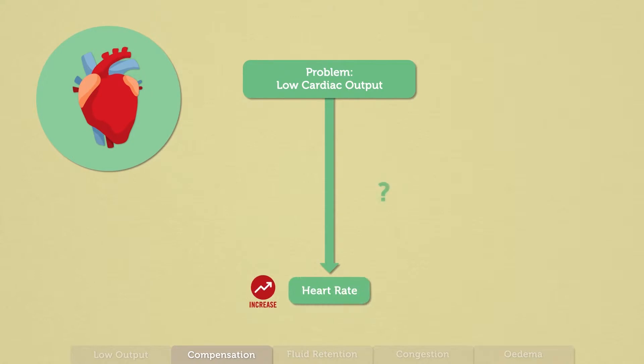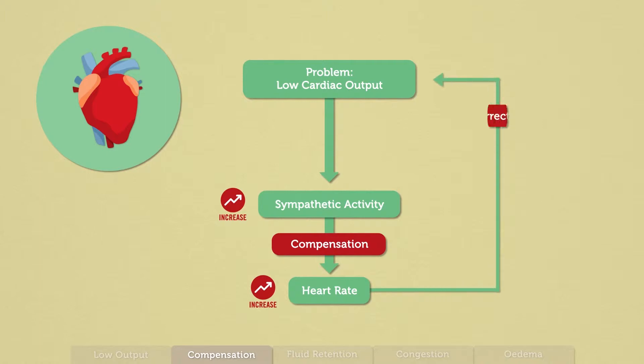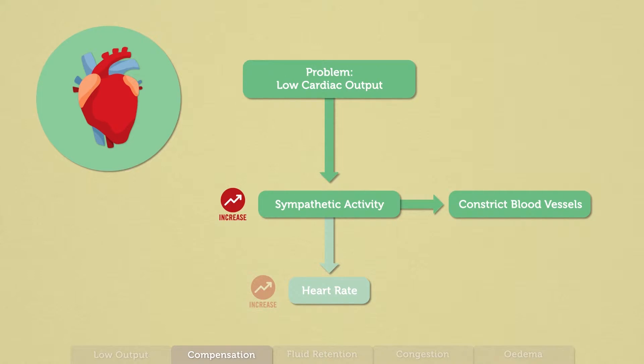How and why does low output increase how fast my heart is beating? To do this, the sympathetic nervous system increases its activity. The increased heart rate helps to maintain cardiac output. The sympathetic activity also helps to constrict systemic blood vessels, which helps to maintain arterial pressure.